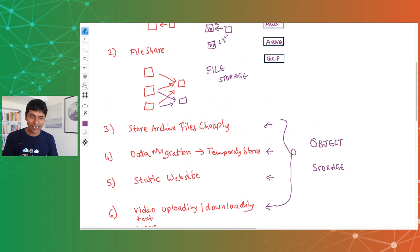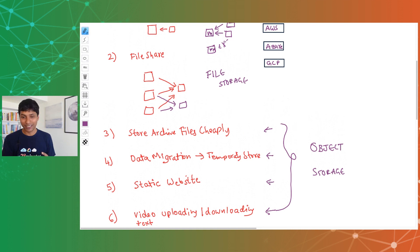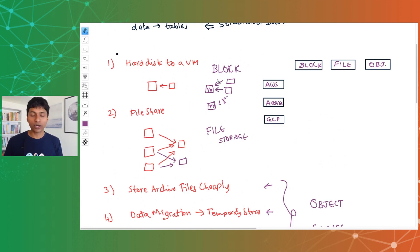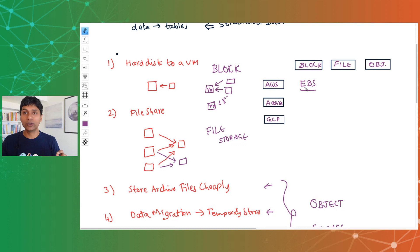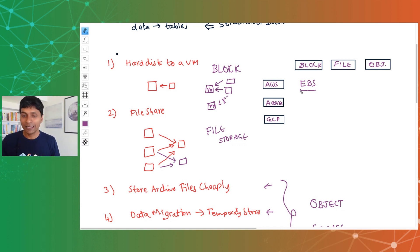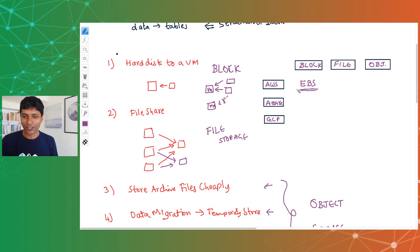Now let's look at the specific cloud services for each storage type. For block storage — a storage device attached to only one VM at a time — the block storage service in AWS is called Elastic Block Store. Don't get confused with Elastic Beanstalk, which is a compute-related service. The abbreviation EBS refers to Elastic Block Store, and that is the block storage service in AWS.